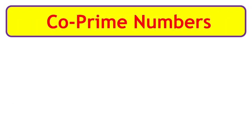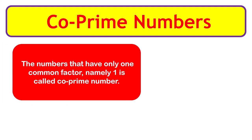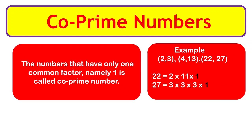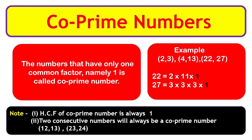Co-prime numbers: numbers that have only one common factor — namely 1 — are called co-prime numbers. Examples: 2 and 3, 4 and 13, 22 and 27. For instance, 22 has factors 1, 2, and 11, while 27 has factors 1, 3, and 9, giving only one common factor: 1. Notes: the HCF of co-prime numbers is always 1, and two consecutive numbers are always co-prime, such as 12 and 13.